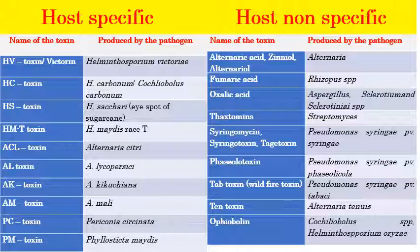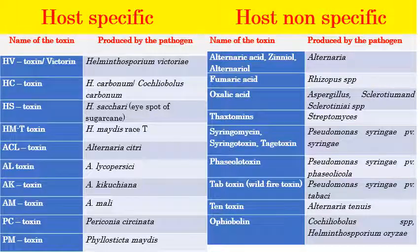These toxins play a major role in pathogenesis. While enzymes play a major role in entering the plant system or extracting nutrients from it, toxins are extremely poisonous and toxic to the plant system. They alter physiological functions, trigger expression of disease symptoms, promote disease spread, and drive the entire pathogenesis process.